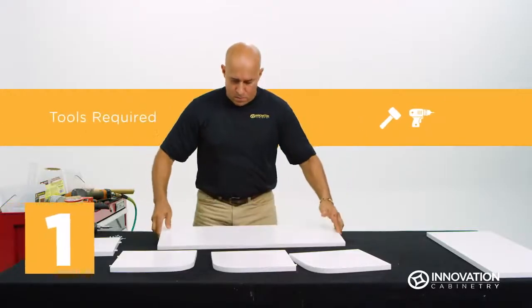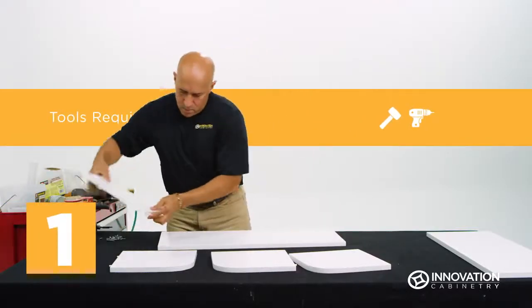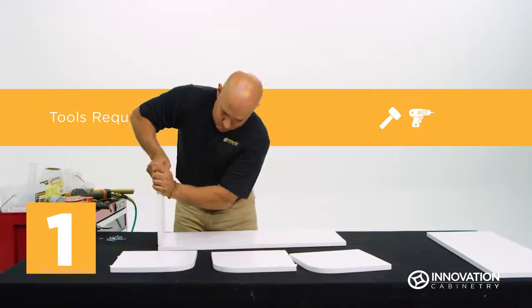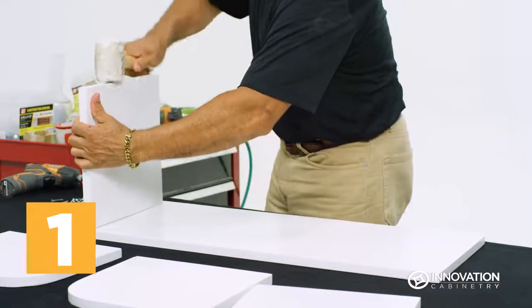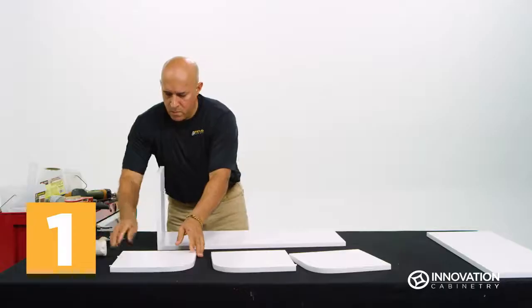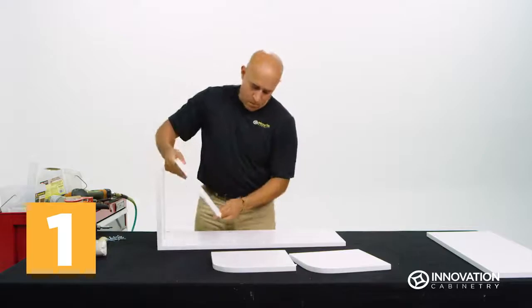Position one of the shelf sides in front of you with the pre-drilled holes facing up. Slot either the top or bottom piece into the holes on one end of the shelf side. Use a rubber mallet to lightly tap the top or bottom into place.